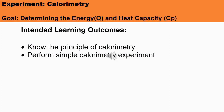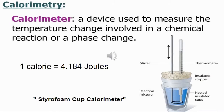In this experiment we're going to perform calorimetry. Our goal is to determine the energy represented by Q and the heat capacity, also known as the specific heat. The intended learning outcomes after the experiment are to know the principle of calorimetry and to perform a simple calorimetry experiment.